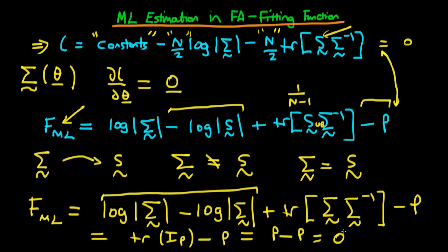This provides intuition as to why we've created F_ML as we have. Essentially, when we have perfect estimates of the sample variance-covariance matrix S, then F_ML equals 0. In general, Σ is not going to equal S and F_ML is going to be above 0, but at least we know that if there was a perfect fit this would have a value of 0.